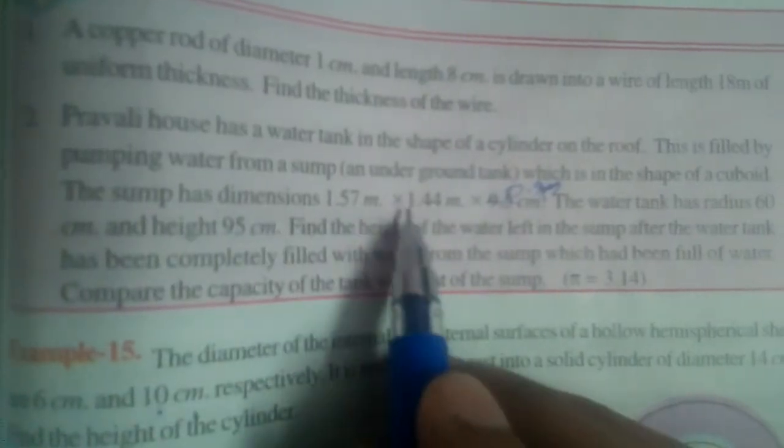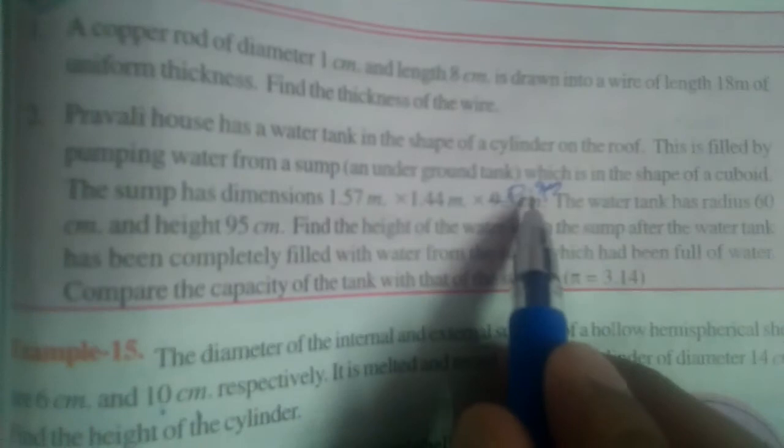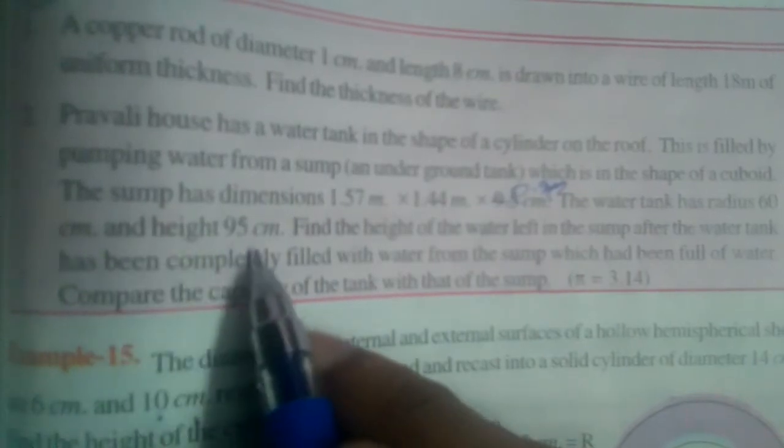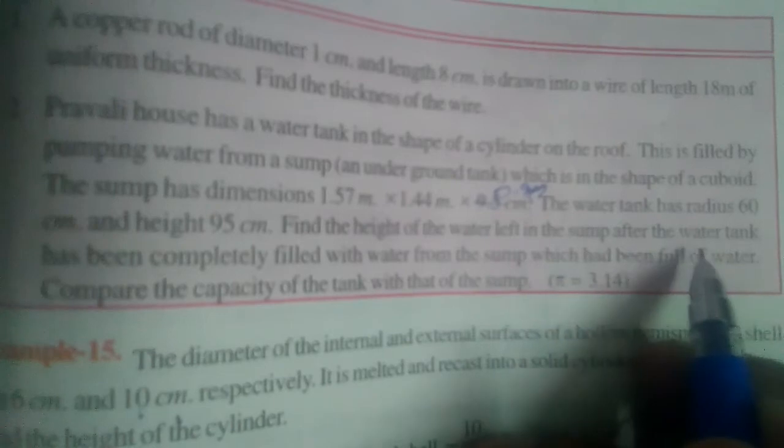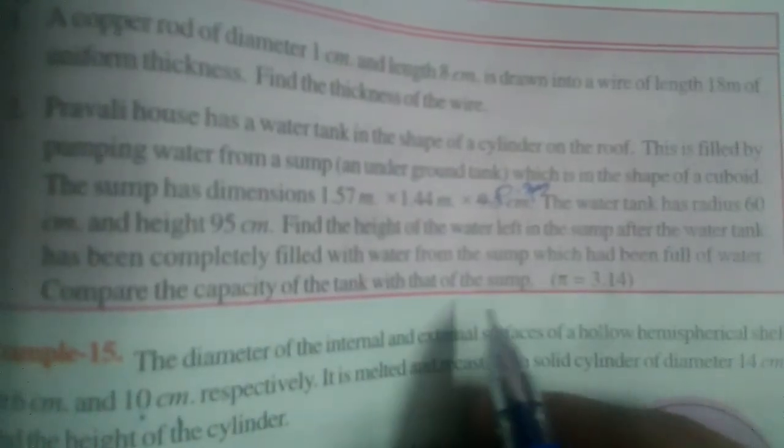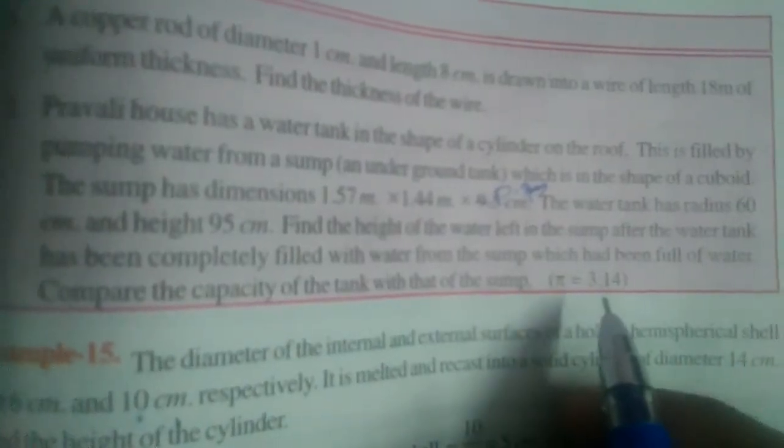The sump has dimensions 1.57 by 1.44 by 0.95. And the water tank has radius 60 cm and height 95 cm. Find the height of the water left in the sump after the water tank has been completely filled with water from the sump which had been full of water. Compare the capacity of the tank with that of the sump. Take pi as 3.14.